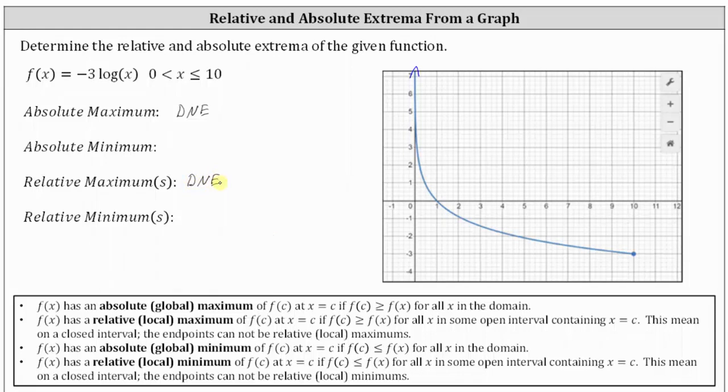But notice how we do have a low point on the graph, this right endpoint, where the ordered pair is 10 comma negative 3. And because this is the lowest point of all the points on the graph, this point does represent the absolute minimum. Take a look at the definition below.